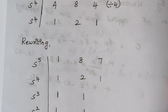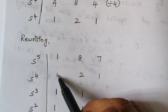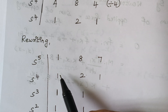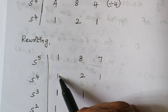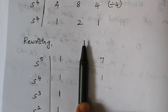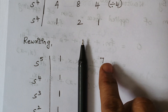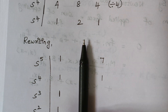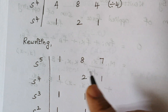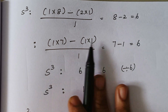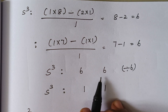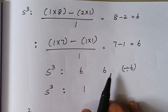The next step is to find the S³ row. Step 1: (1×8 − 2×1) divided by 1, which gives 8 minus 2 equals 6. For the second element, hiding the first column: (1×7 − 1×1) divided by 1, so 7 minus 1 gives a value of 6. Both elements are 6, so the S³ row has two elements, both equal to 6.